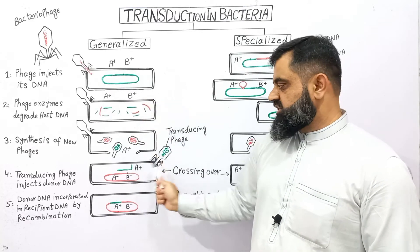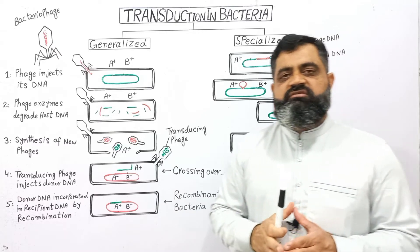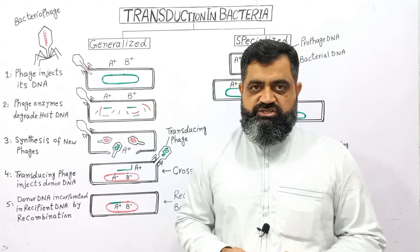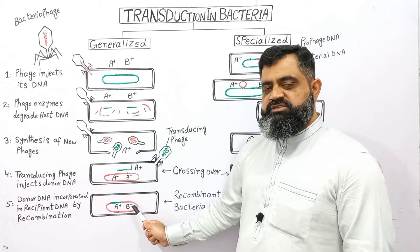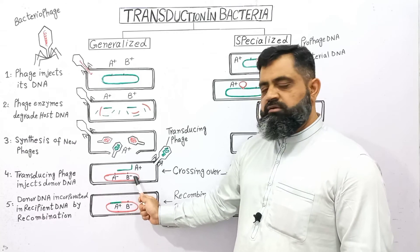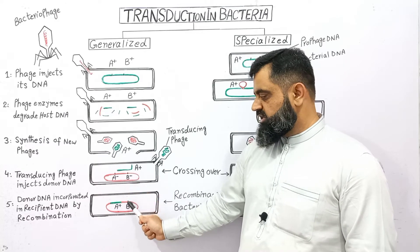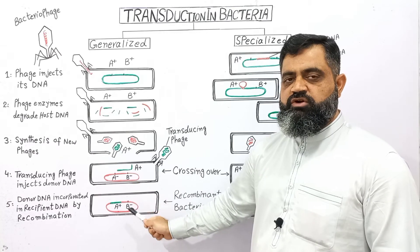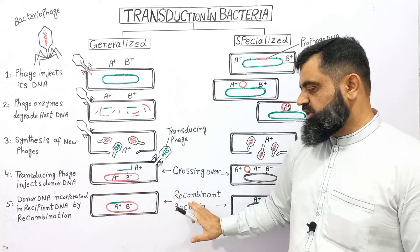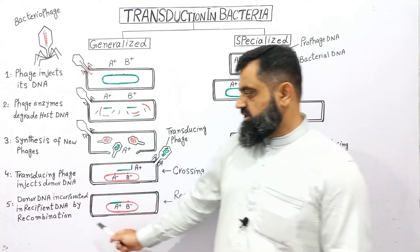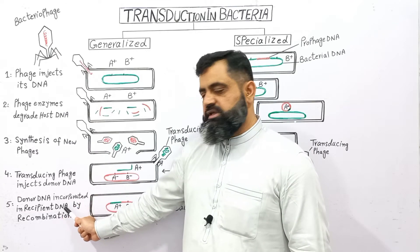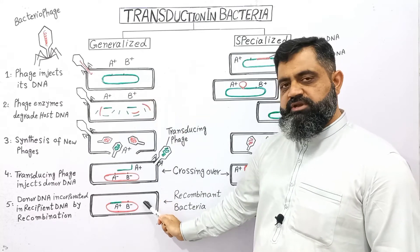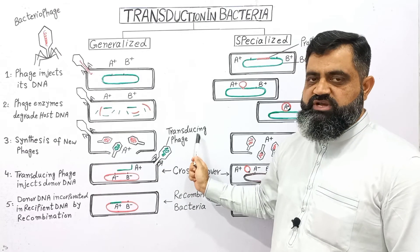This is the donor bacterium whose DNA has been transferred into the recipient bacterium. When this happens, crossing over takes place between these two chromosomes and parts of the chromosomes are exchanged with each other. As you can see in the next diagram, after crossing over the recipient chromosome has changed. The original bacterium contained DNA in red color, which was A negative and B negative, and has now been transformed into A positive and B negative. A positive is the gene from the donor bacterium, while B negative is part of the gene from the chromosome of the recipient bacterium. This bacterium is now known as a recombinant bacterium, and transduction has been completed. In the last step, donor DNA has been incorporated into the recipient DNA by recombination. In this way, a part of DNA from the donor bacterium has been transferred into the recipient bacterium with help of a phage virus, known as a transducing phage. This whole process is known as generalized transduction.